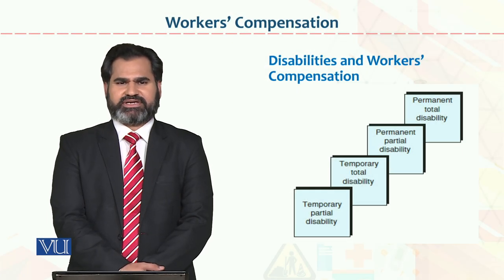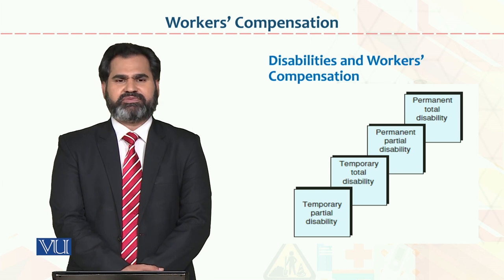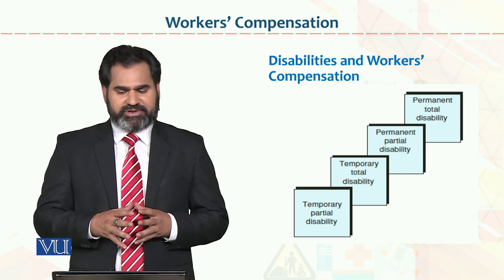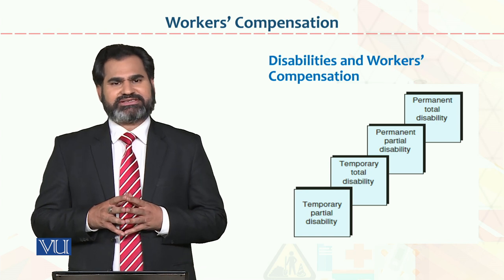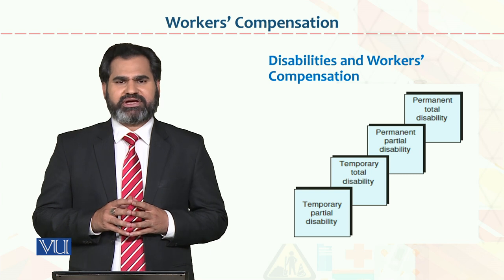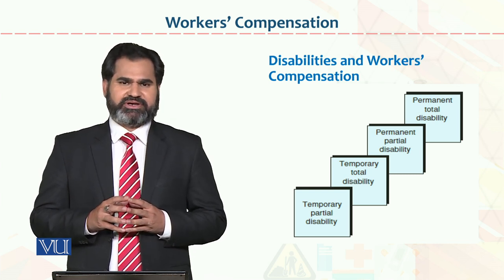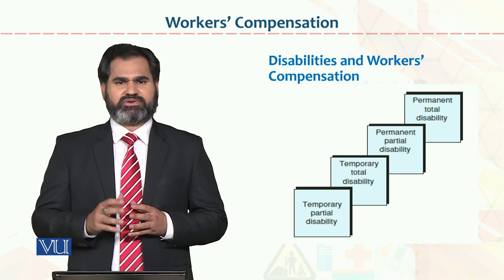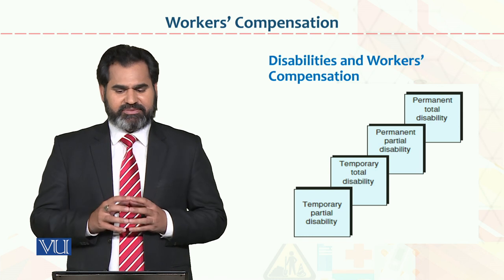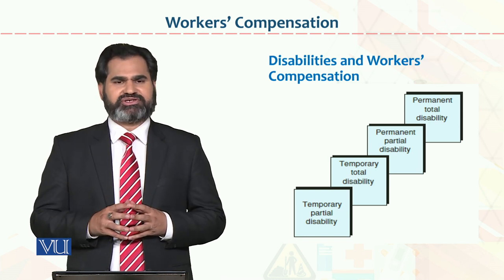Dear students, now we are discussing health and safety laws and regulations relevant to workers' compensation and disabilities. Workers' compensation kis tarah se kaam kar rahi hoti hai — as shown in the four boxes. The first is permanent total disability. Second level is permanent partial disability. Third level is temporary total disability. Last is temporary partial disability.